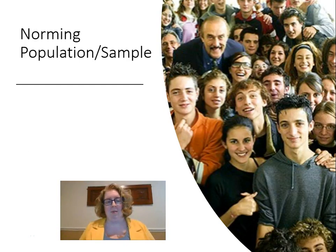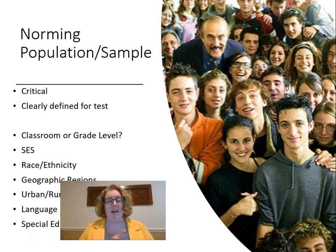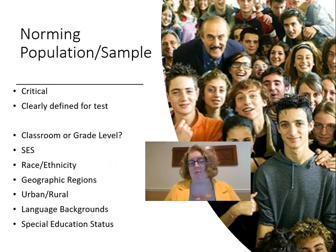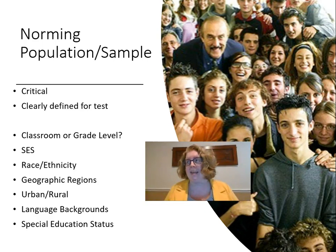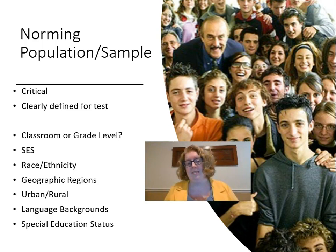It's critical to look at that norming population sample — it's clearly defined for the test. We want to consider things like the classroom or grade level of the student, socioeconomic status, race or ethnicity, geographic regions such as south, midwest, east, urban and rural areas, language backgrounds, and special education status. We want to make sure the norming population includes those types of students and is also representative of the general population.